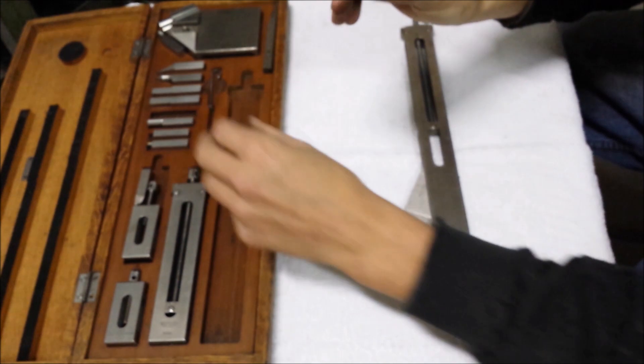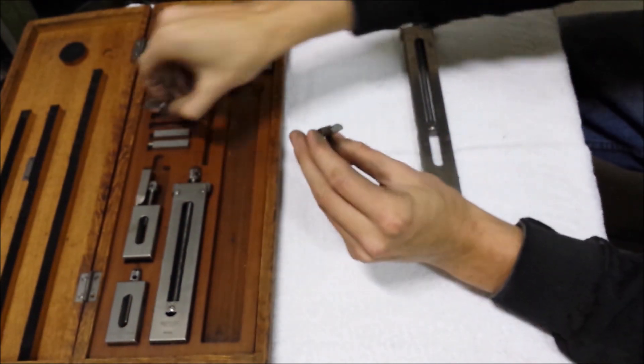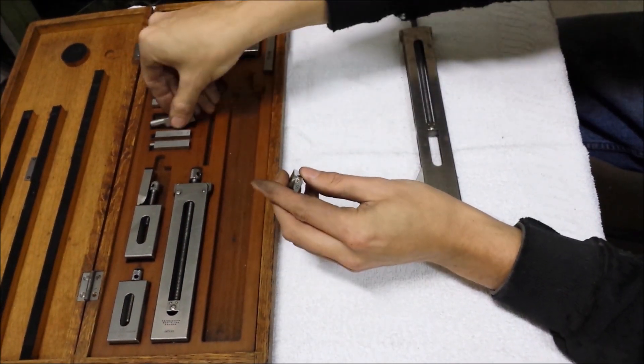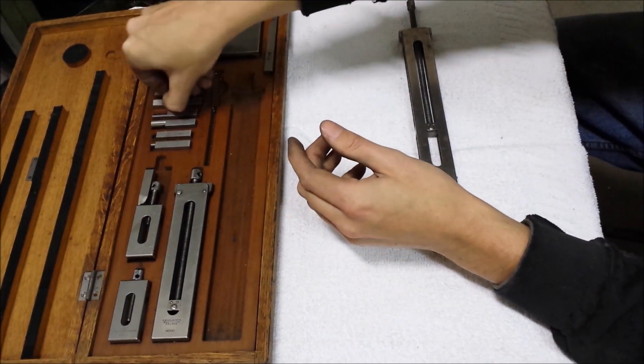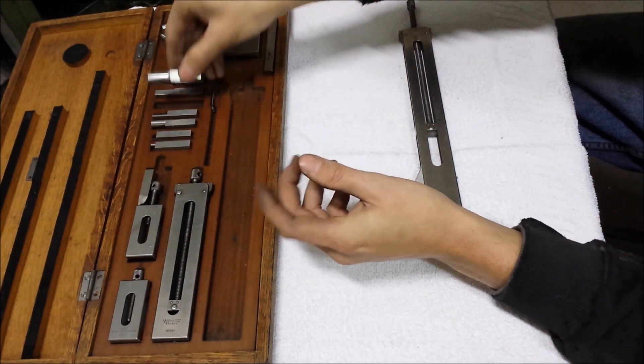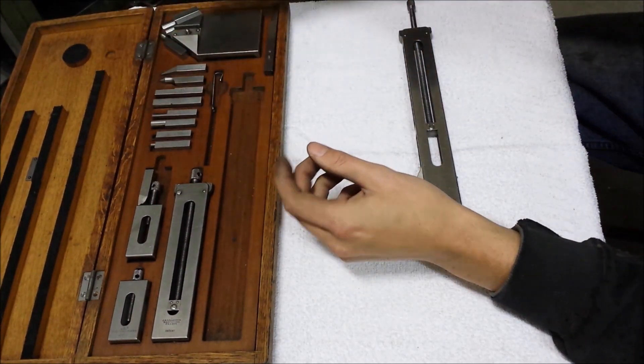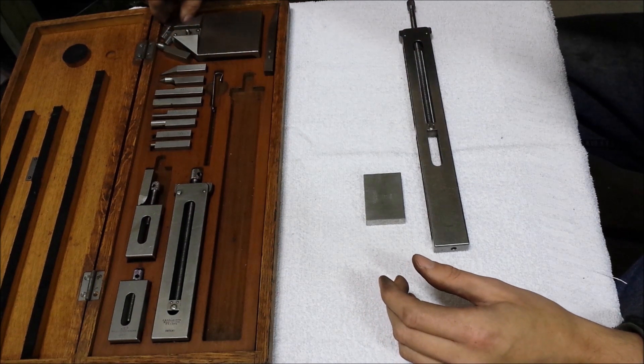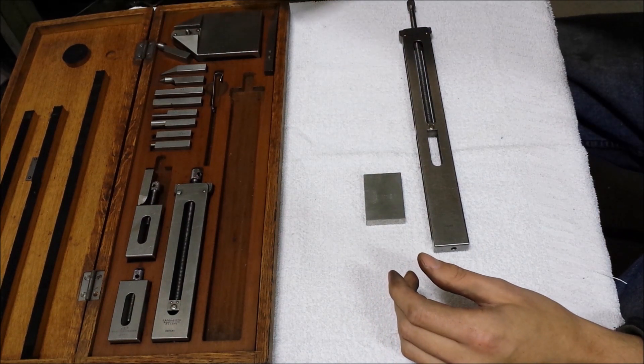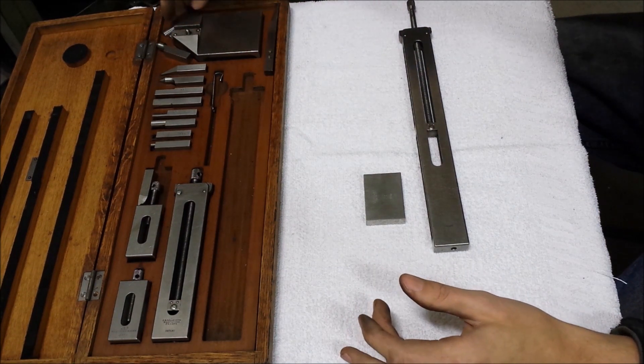You have the bigger ones here, the number fives. I think there's a little larger here. Yeah, number eights. So I seem to have something from some other kits also in this box.